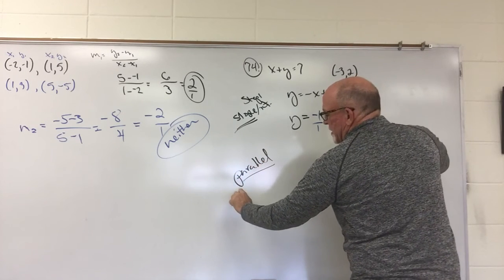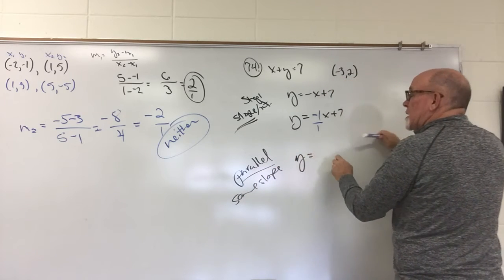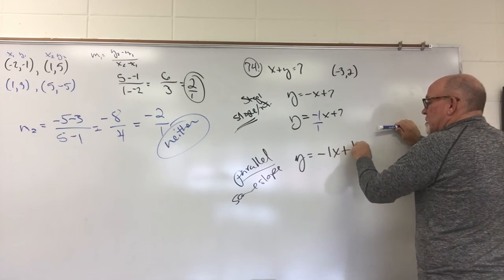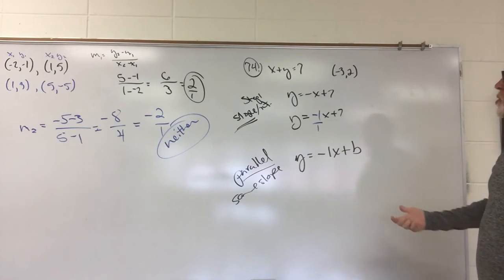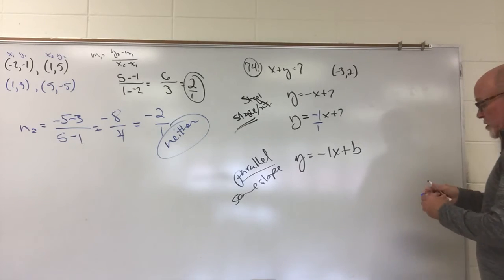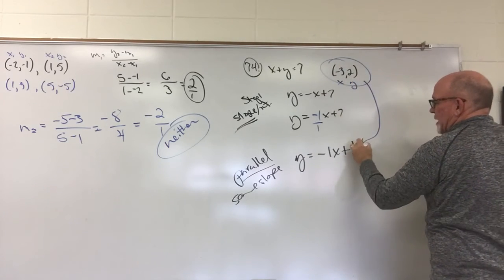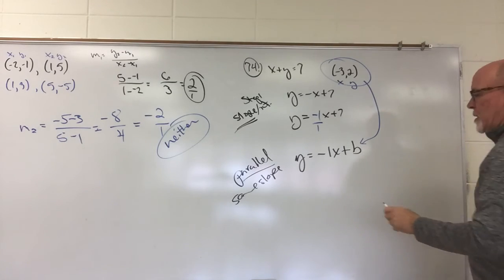So, our line that's going to be parallel, for the parallel scenario, it's going to have the exact same slope. So, we're looking at a line that is y equals a negative 1x plus b. It is not going to be the 7 anymore. We need a new value for b. I do have an x and y to plug in. So, I'm going to take this value and plug it in to x and y and see if we can come up with an equation.